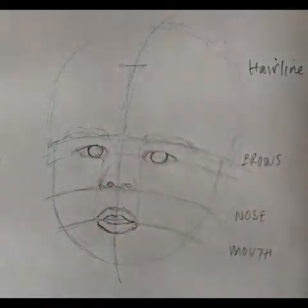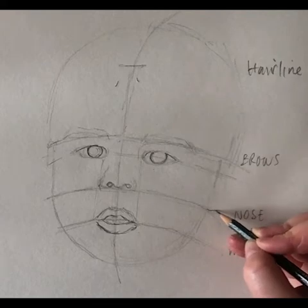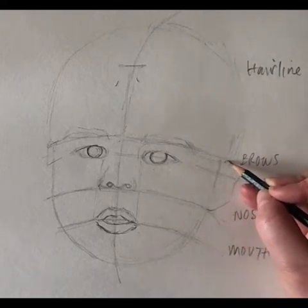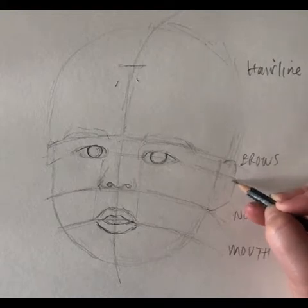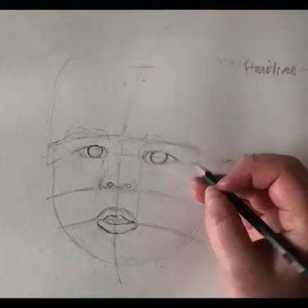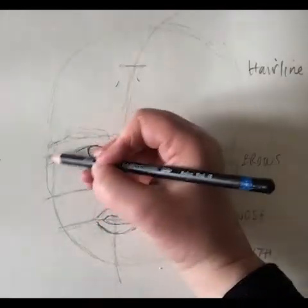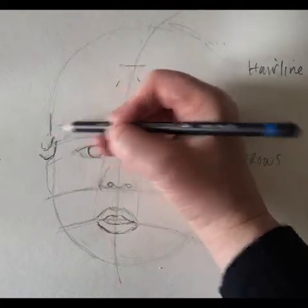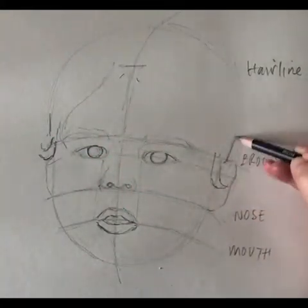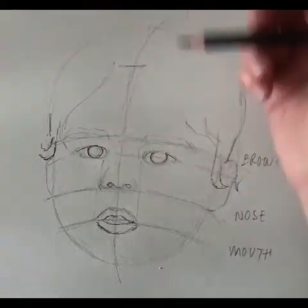I'm just emphasising the iris there because I'm happy with how it's going and I just want to build on the drawing. Children's ears roughly sit between the brow line, the centre line, and the nose. That's not because they've got bigger ears than adults — it's just that the ears are proportionate as an adult's are. It's just that the facial features are squished to the bottom.